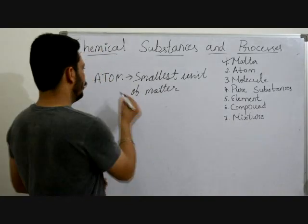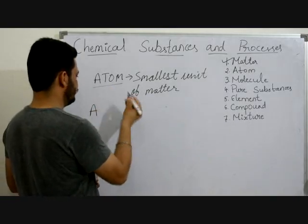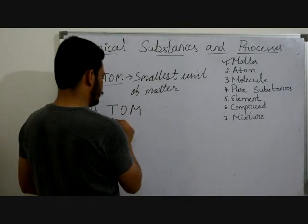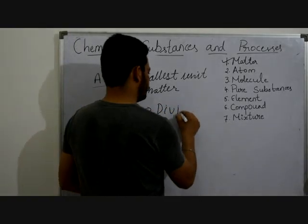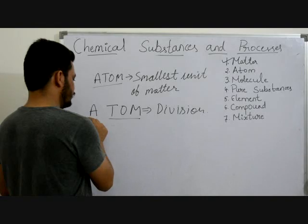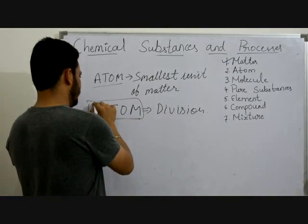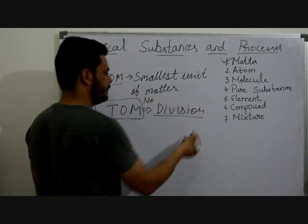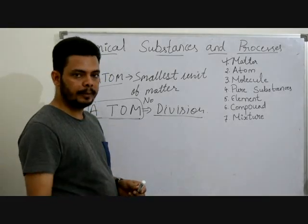If we look at the wording of the atom, it has two divisions: 'A' and 'tom'. The word 'tom' means division. And if you attach 'A' to it, it becomes atom, and the division becomes low — meaning low division. It means it's the smallest unit which cannot be divided further.